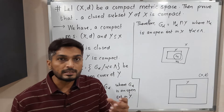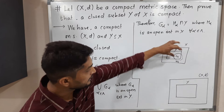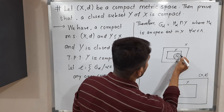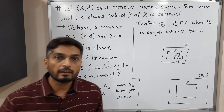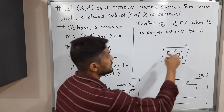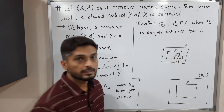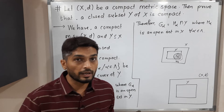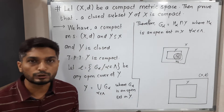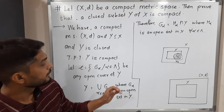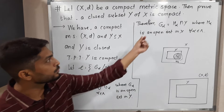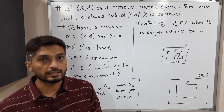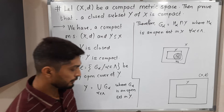So how do we get an open set in Y? Basically we have an open set H_alpha in X. When you take the intersection of H_alpha with Y, we get an open set in Y. So G_alpha is an open set in Y, and G_alpha equals H_alpha intersection Y, where H_alpha is an open set in X, for all alpha belonging to lambda.